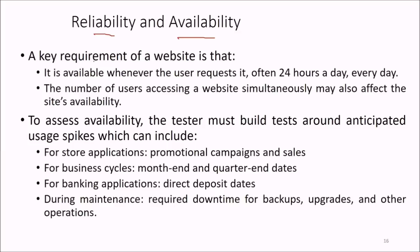In reliability and availability testing, a key requirement is that the website be available whenever the user requests it. The number of users accessing simultaneously can affect availability. Testers should build test cases around anticipated usage spikes, which include promotional campaigns and sales for store applications, month-end and quarter-end dates for business cycles, direct deposit dates for banking applications, and maintenance downtime for backups and other operations.